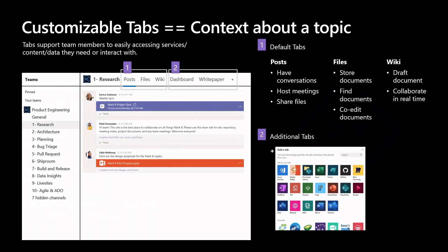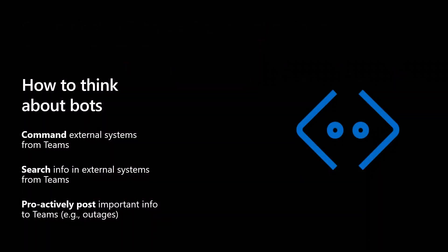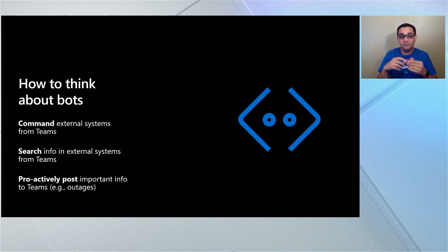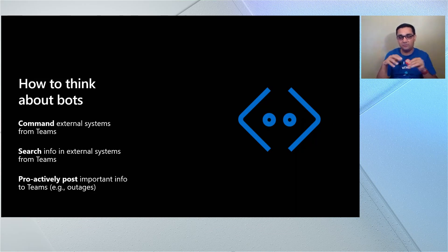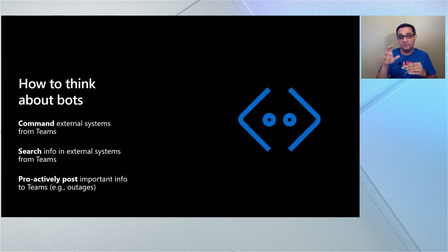Think about how cool it would be to have a digital assistant type thing where you can command a system to do something from inside Teams — you can do that with bots. You can send a message in a channel and ask a bot to do something. For example, if an outage happens and you want to run a query to figure out the number of users impacted, you can automate that using a bot. Middle of the night, you don't have to think about how to write the query — you just send a command and it does it for you. Bots can also be used to search for stuff without leaving Teams.